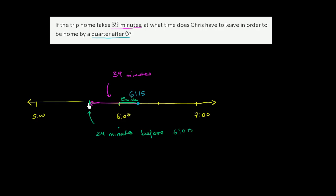But 24 minutes before 6 o'clock would be how many minutes after 5 o'clock? Well, once again, we know that there's 60 minutes in an hour. So what's 60 minus 24? Let me do it right over here.